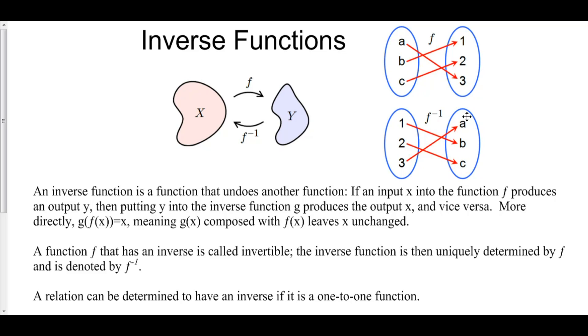It just undoes everything that your function did. So if A goes to three, in your inverse, that means that three goes to A.